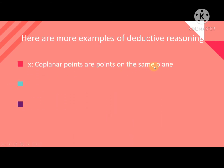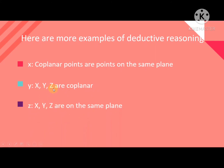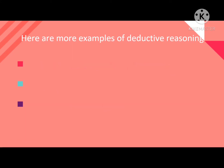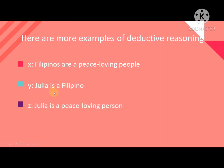Another example: Coplanar points are points on the same plane — this is the general statement. For the conclusion, X, Y, Z are on the same plane. Another example: Filipinos are peace-loving people — the general statement. Julia is a Filipino — the particular statement. Therefore, the conclusion is: Julia is a peace-loving person.